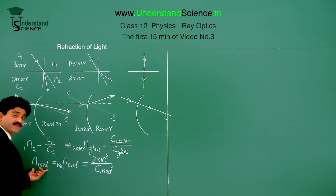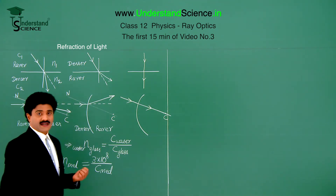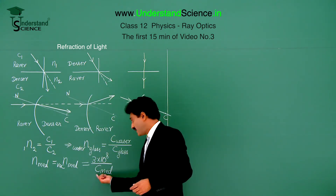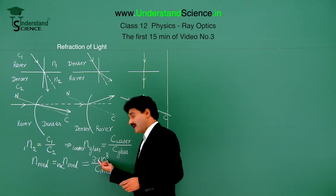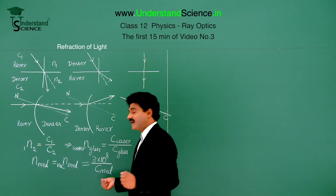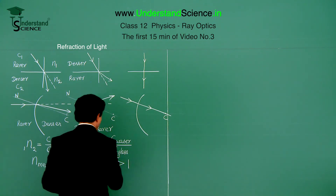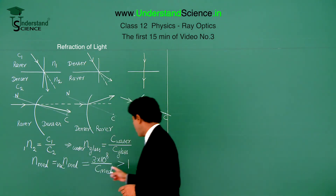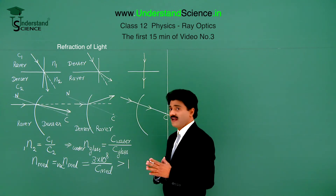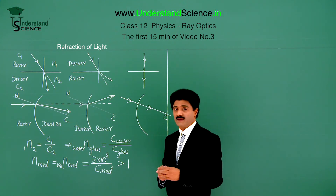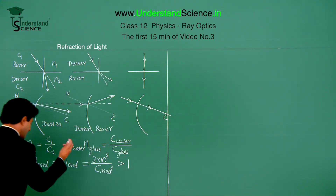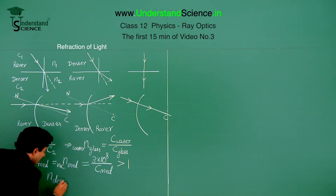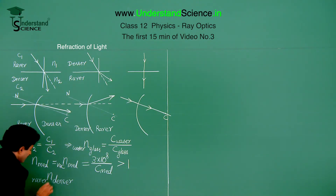The value of any absolute refractive index of a medium is always greater than 1. This is because the speed of light in vacuum is the greatest — nothing can exceed it — so speed in the medium is always lesser. Greater divided by lesser gives a value greater than 1. So the absolute refractive index of any medium is always greater than 1. This is the refractive index of denser with respect to rarer, and this condition gives a value greater than 1.